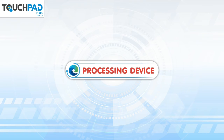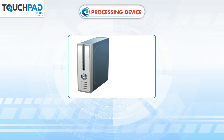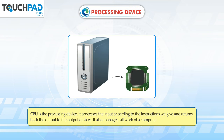Processing Device. The CPU is the processing device. It processes the input according to the instructions we give and returns the output to the output devices. It also manages all the work of a computer.